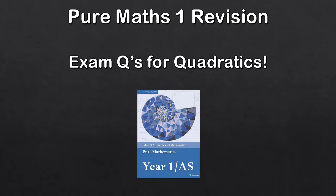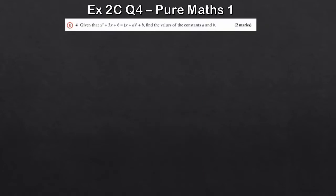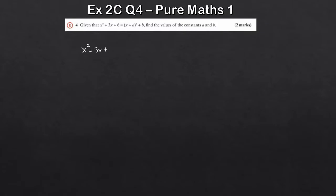So let's take a look at the first question — a nice introductory question. We're given a quadratic, x squared plus 3x plus 6, and we're asked to find it in completed square form. So it's important that you recognise that this form here is just completed square form. Two marks for this, hopefully nothing too crazy. So x squared plus 3x plus 6.